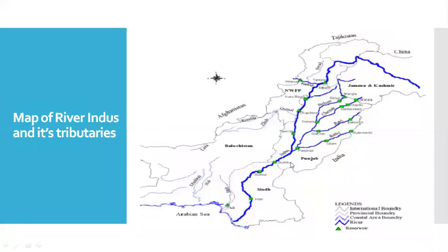Here you can also see the different tributaries of River Indus on a second map. This dark blue color line shows the main River Indus. The four eastern tributaries shown here are Jehlam, Chenab, Ravi, and Satlaj. And the western tributaries shown here are Kabul, Swat, Dasht, and Zob.